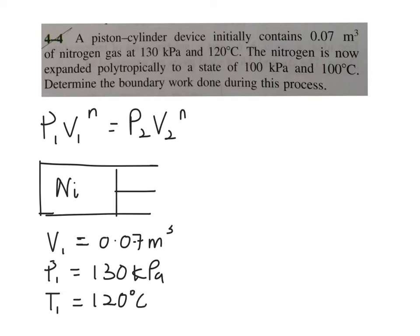It is now expanded polytropically to a state of 100 kilopascal. Now that you have your final state or state 2, which is given to your pressure as 100 kilopascal and that the final temperature is equal to 100 degrees C. So what you need to find now is you need to determine the boundary work done during this process of expansion.